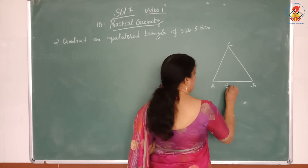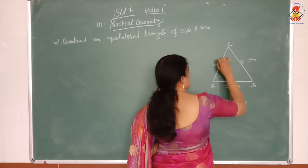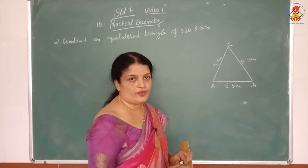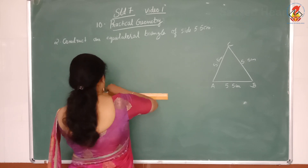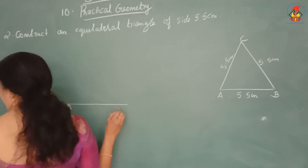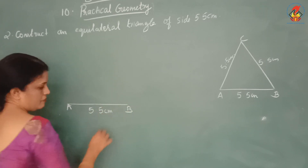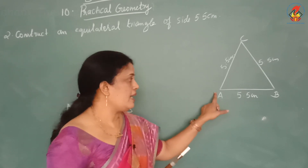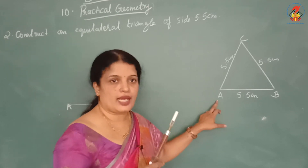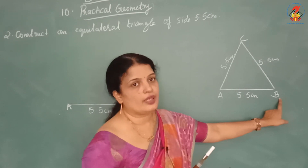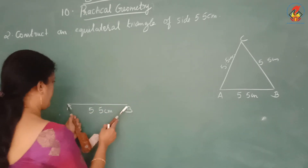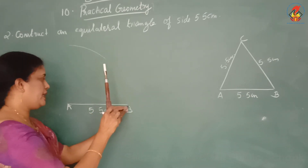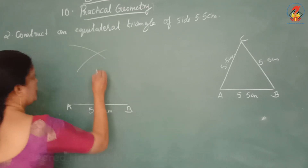Draw a line segment AB of length 5.5 cm using the ruler. Then, using the compass with the same distance of 5.5 cm, draw an arc with A as center and another arc with B as center, both of radius 5.5 cm. The point of intersection of these two arcs is marked as C. Then join CA and CB.